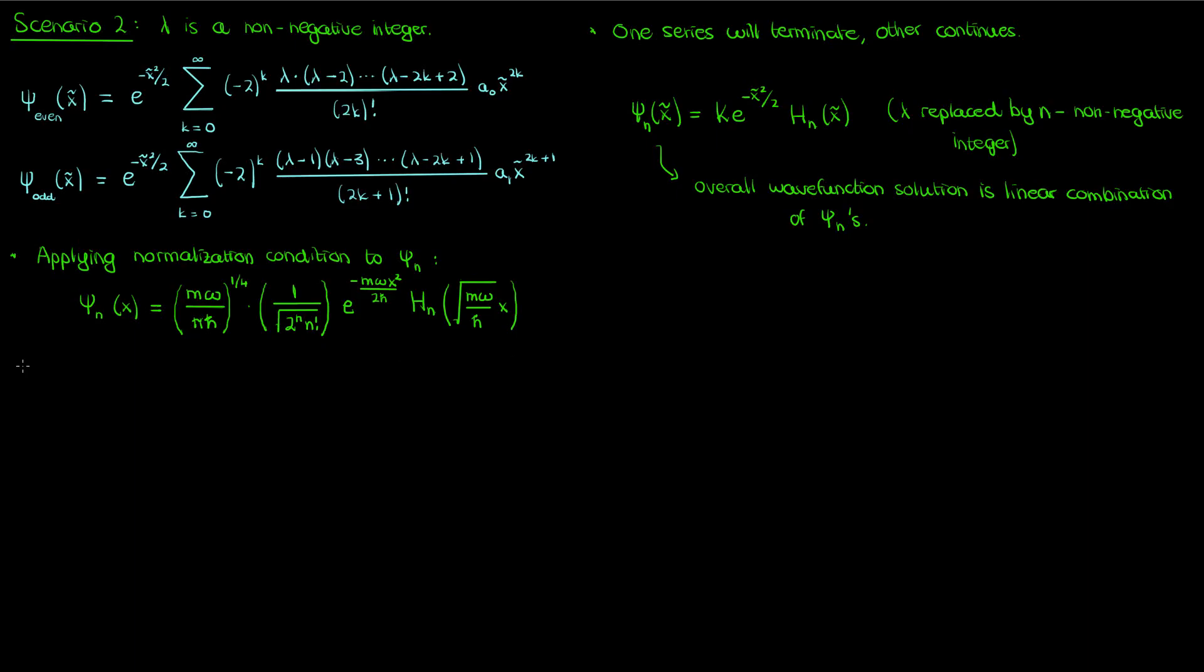But there's an additional missing piece in our discussion, the energy. We haven't spoken about that much have we? Recall that the energy was part of the constant C that we created in our non-dimensionalization process and that this C was absorbed into λ as (C - 1)/2. Let's now substitute C in terms of the original constants into the expression for λ and then let's isolate the energy E.